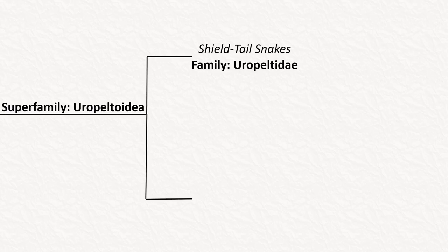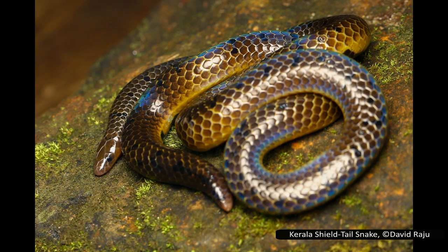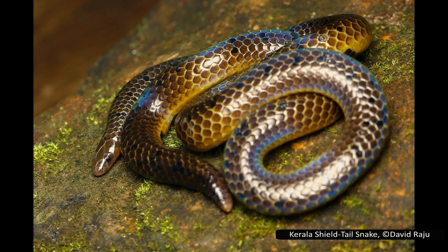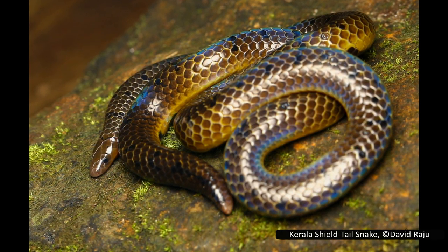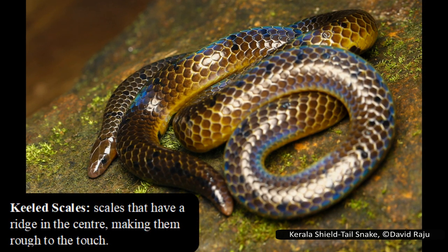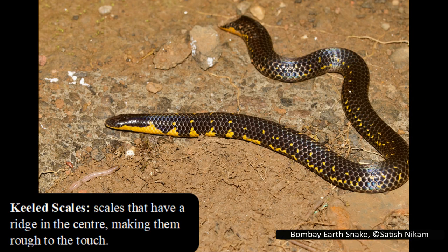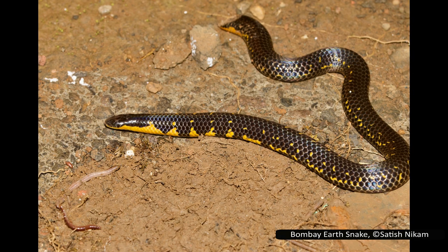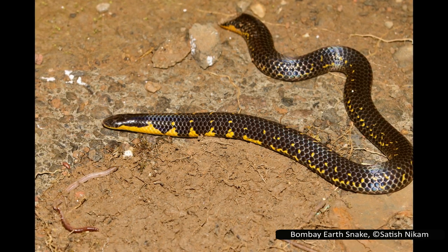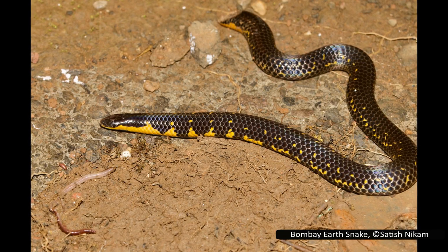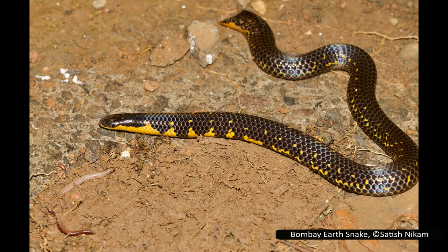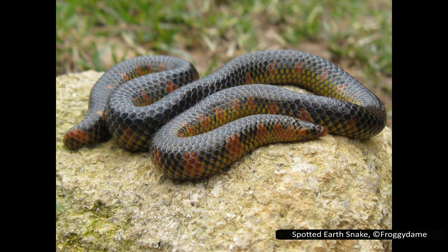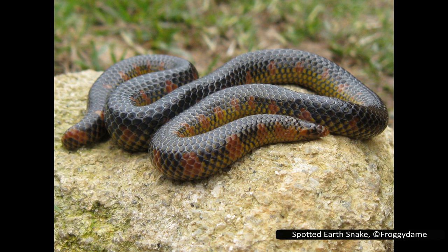The first is Uropeltidae, or the shieldtail snakes — 45 species of burrowing snakes found only in India and Sri Lanka. They are not venomous, and have narrow pointed heads with small, reduced eyes. Their most distinctive feature is that the tail has heavily keeled scales with a ridge in the centre, making them rough to the touch, and the tail is often an unusual triangular or shovel shape — used to plug the entrance to their burrow, preventing other snakes from attacking them from behind. They are nocturnal, prefer high elevations, mostly eat earthworms, and are very docile when handled by humans, preferring to defecate rather than bite.